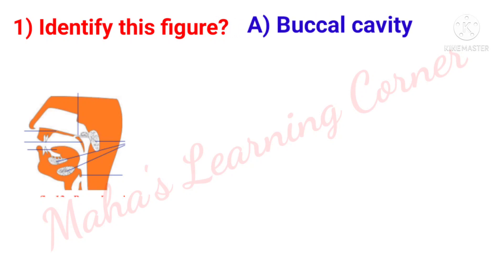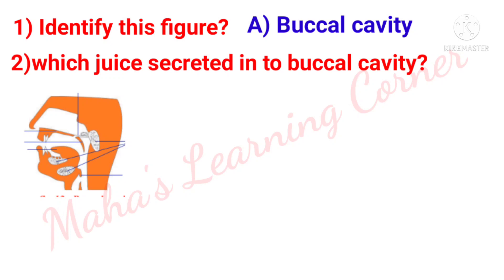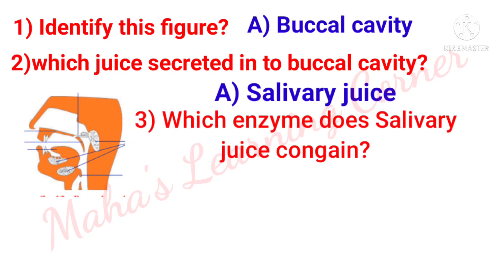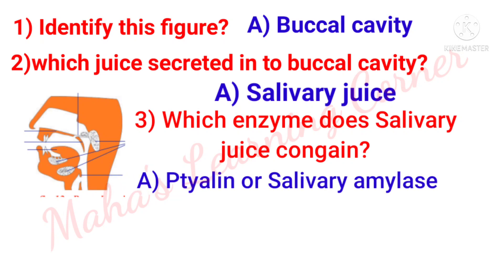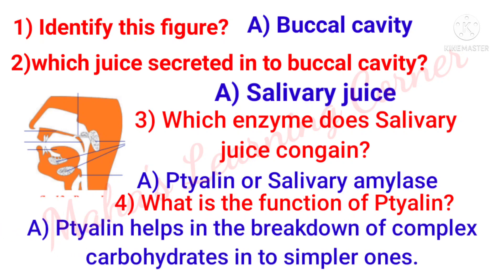Identify this figure. Answer: Buccal cavity. Which juice is secreted into the buccal cavity? Answer: Salivary juice. Which enzyme does salivary juice contain? Answer: Ptyalin or salivary amylase. What is the function of ptyalin? Answer: Ptyalin helps in the breakdown of complex carbohydrates into simpler ones.